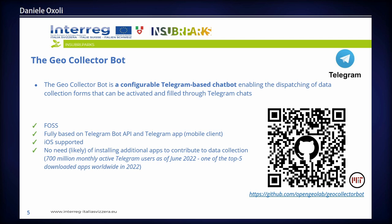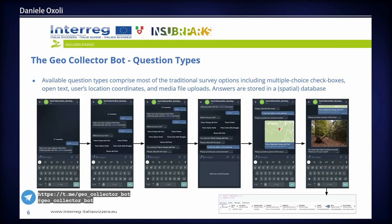Telegram is one of the most popular apps in 2022 with 700 million active users, giving us a good chance that contributors already have it installed. The question types that can be dispatched by the bot cover most traditional survey options: multiple choice, checkboxes, open text, location coordinates, and media file uploads. The flow is very easy — you find the bot in the Telegram menu, activate it with a click, and fill the chat as if you're chatting with a friend.